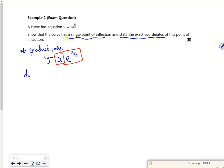So if I do the product rule, it's the first bit multiplied by the second bit differentiated, plus the second bit multiplied by the first bit differentiated.